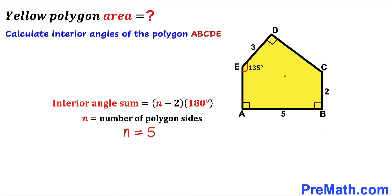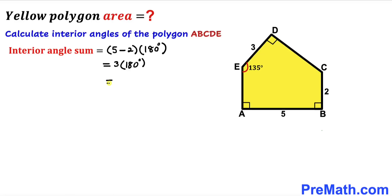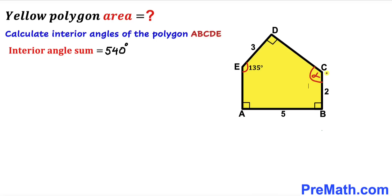The interior angle sum equals (n − 2) × 180°, where n represents the number of polygon sides. In our case n equals 5, so the interior angle sum is (5 − 2) × 180° = 540 degrees.